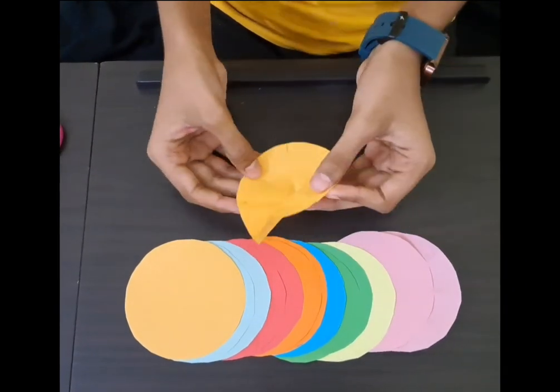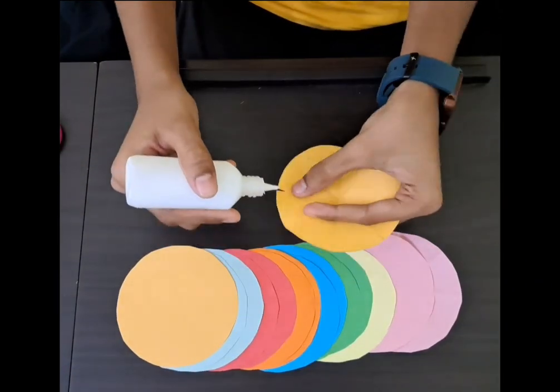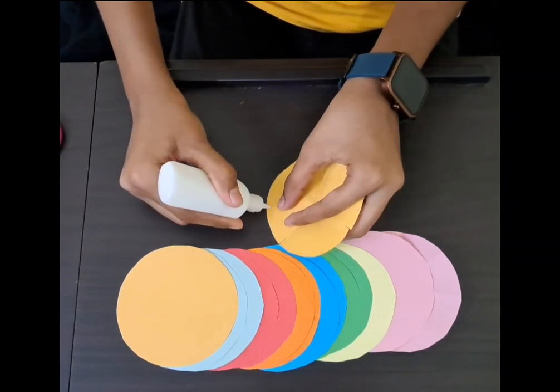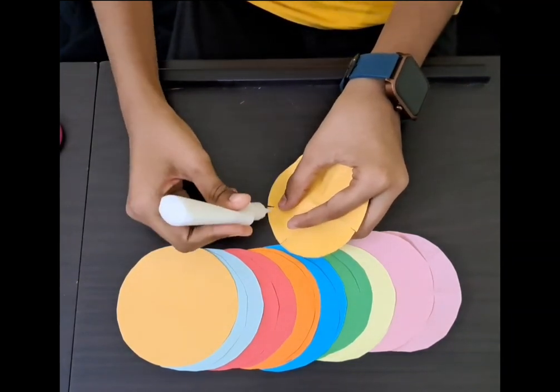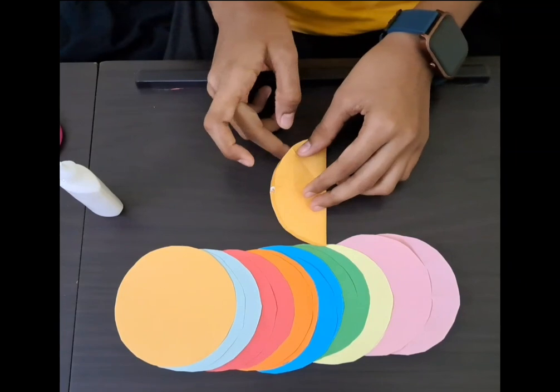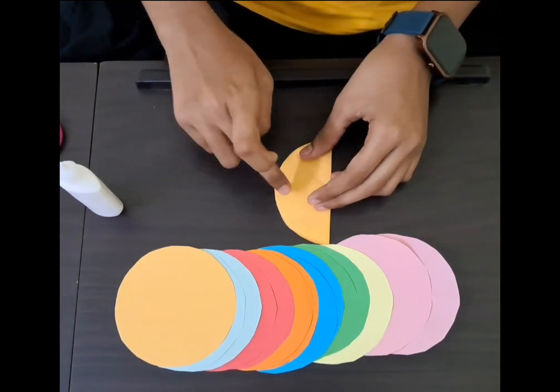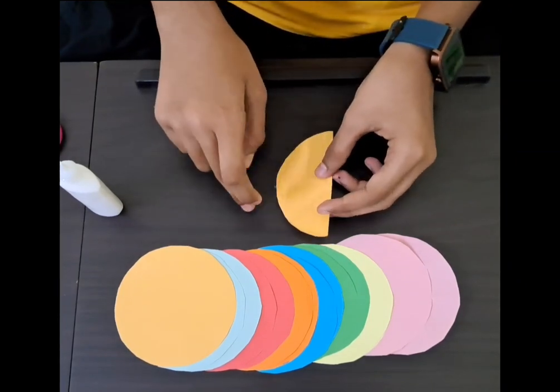You should apply the glue in the center where you have kept a cutting. Now make sure that this end touches the glue and repeat the same for all circles.